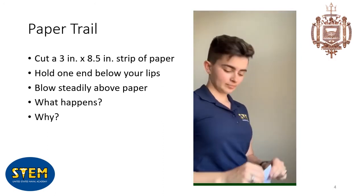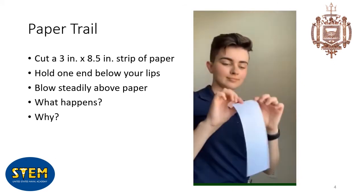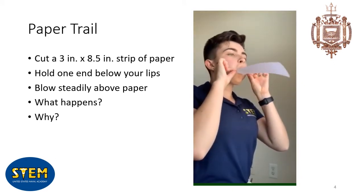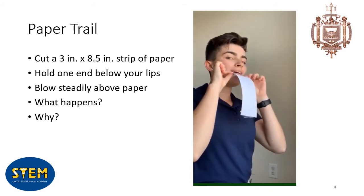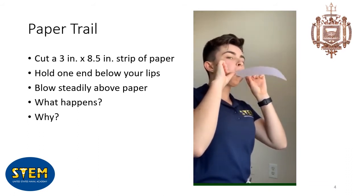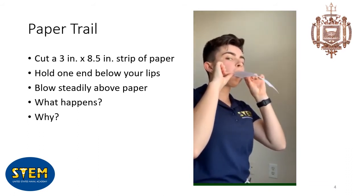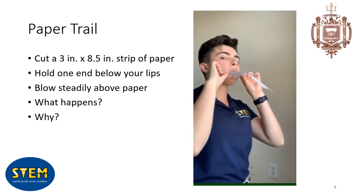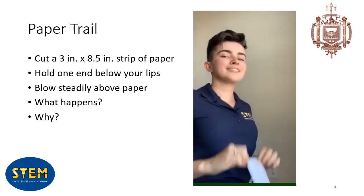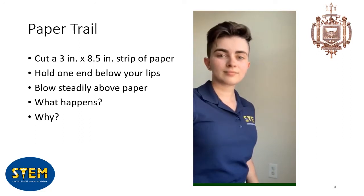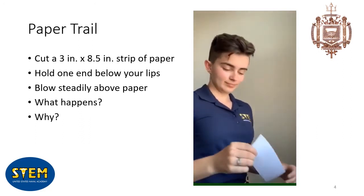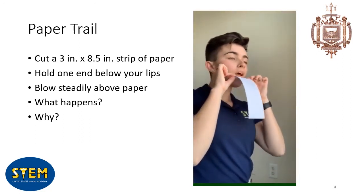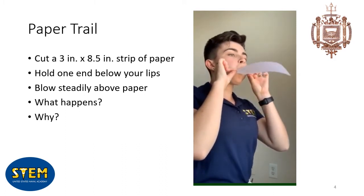This is because of Bernoulli's principle. The high velocity of the air that you blow over the top of the paper leads to low pressure. Since the pressure on the top of the paper is low, and the pressure of the non-moving static air underneath is high, the high pressure pushes the paper upwards towards the low pressure. Objects will always tend to move in the direction of the lower pressure air.